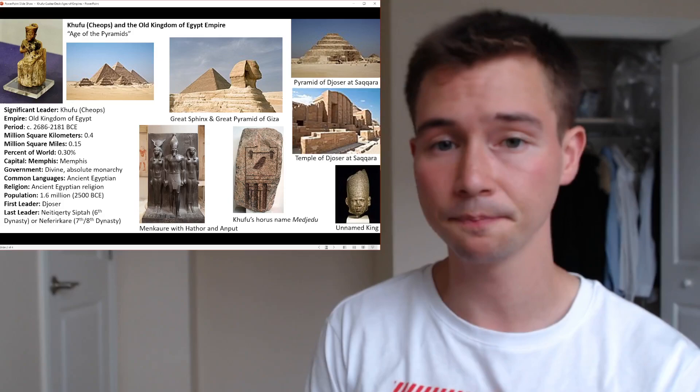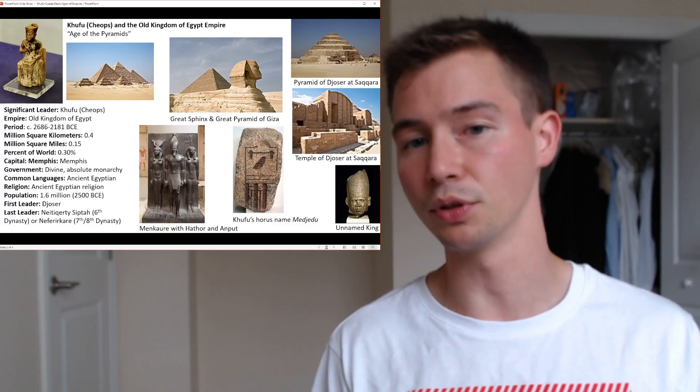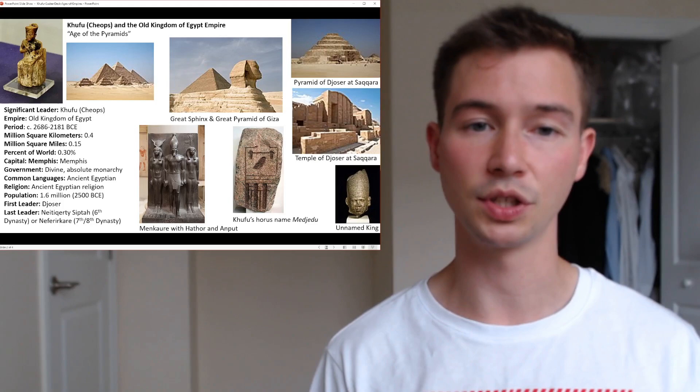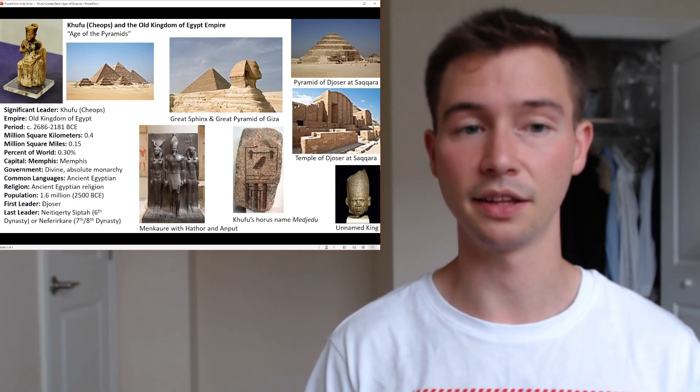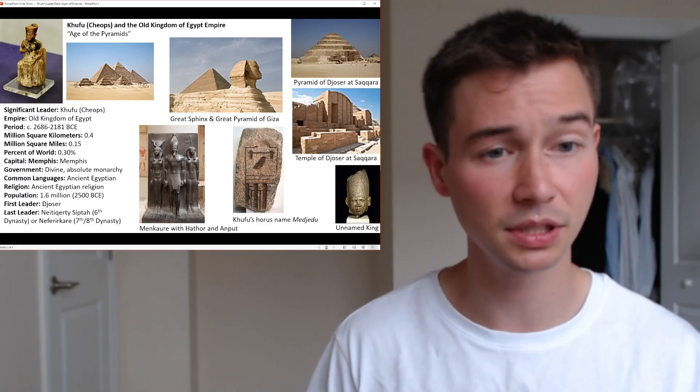Below that we have an unnamed but supposedly significant king. To the left of that, we have Khufu's Horus name, Medjudu, written in hieroglyphs. And to the left of that, we have Menkaure, Hathor, and Anput — famous figures cast, I believe, in bronze.